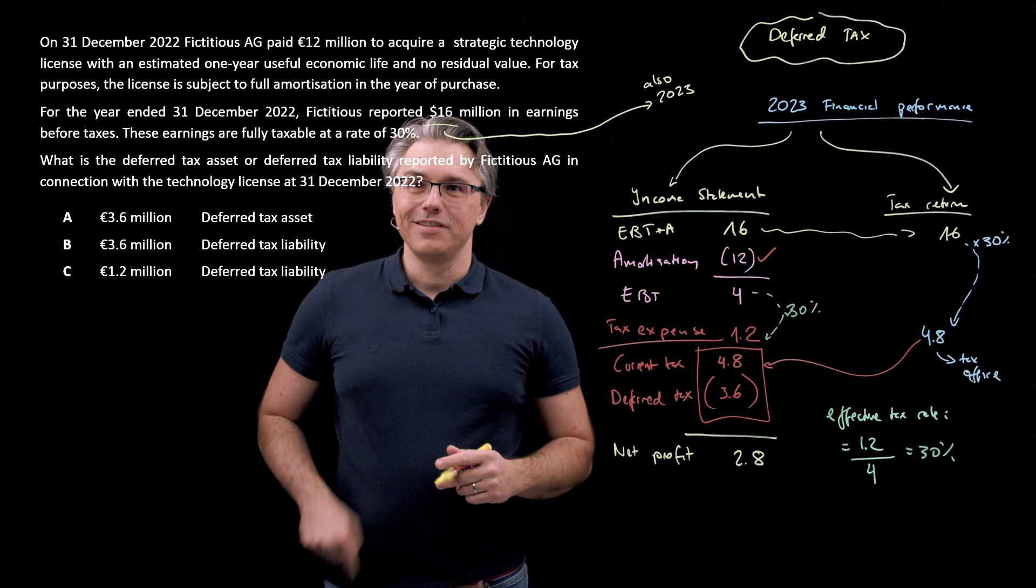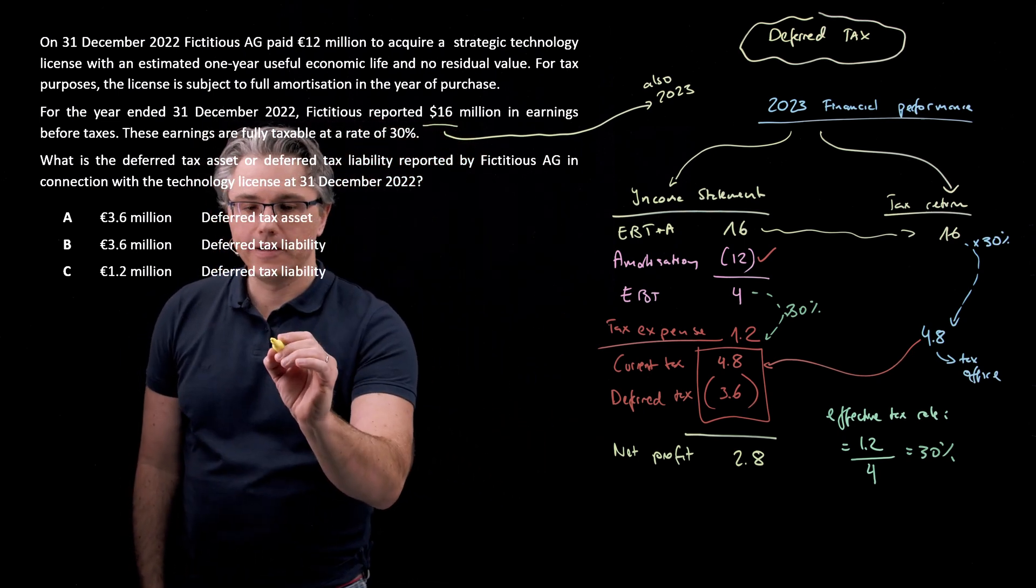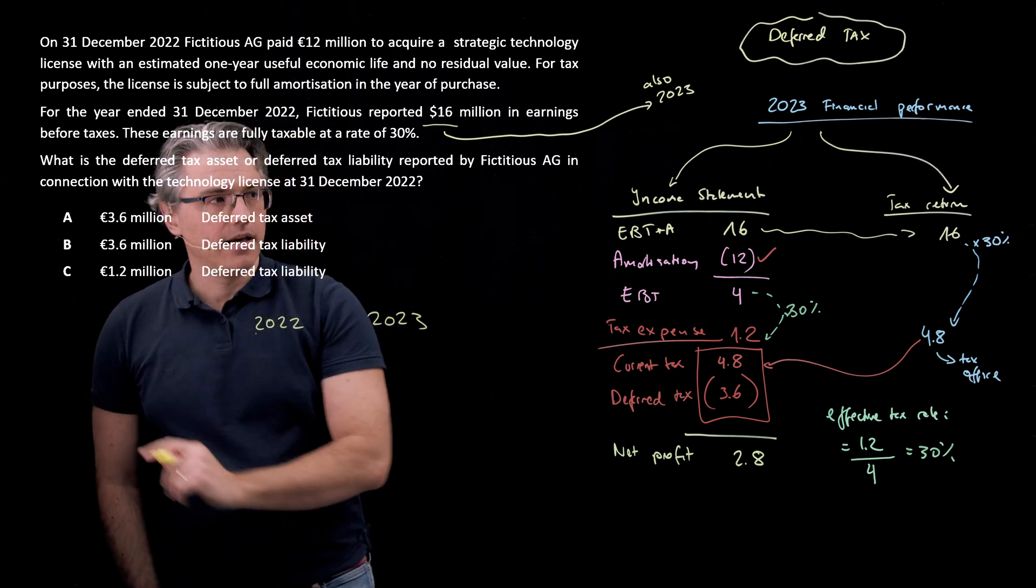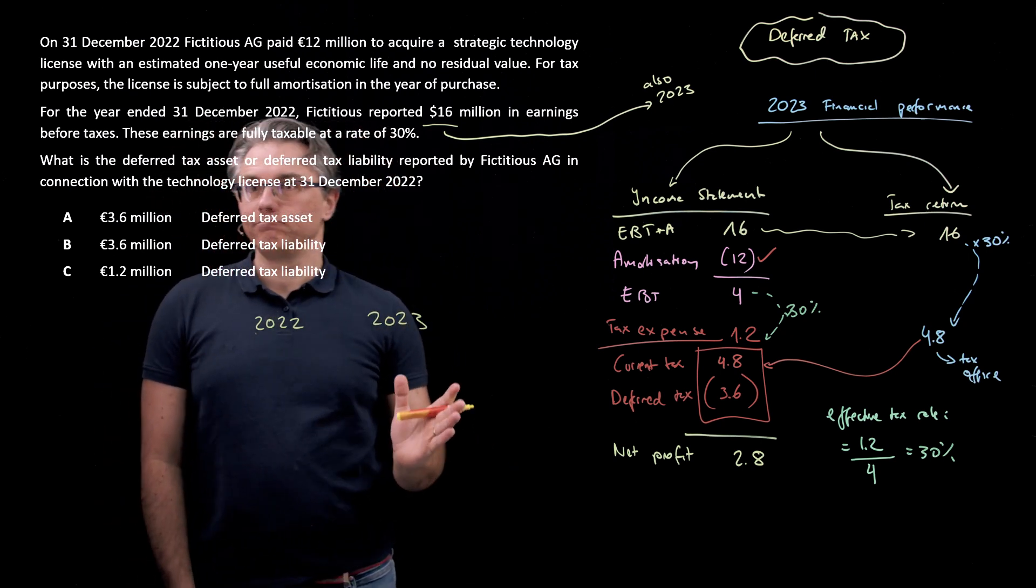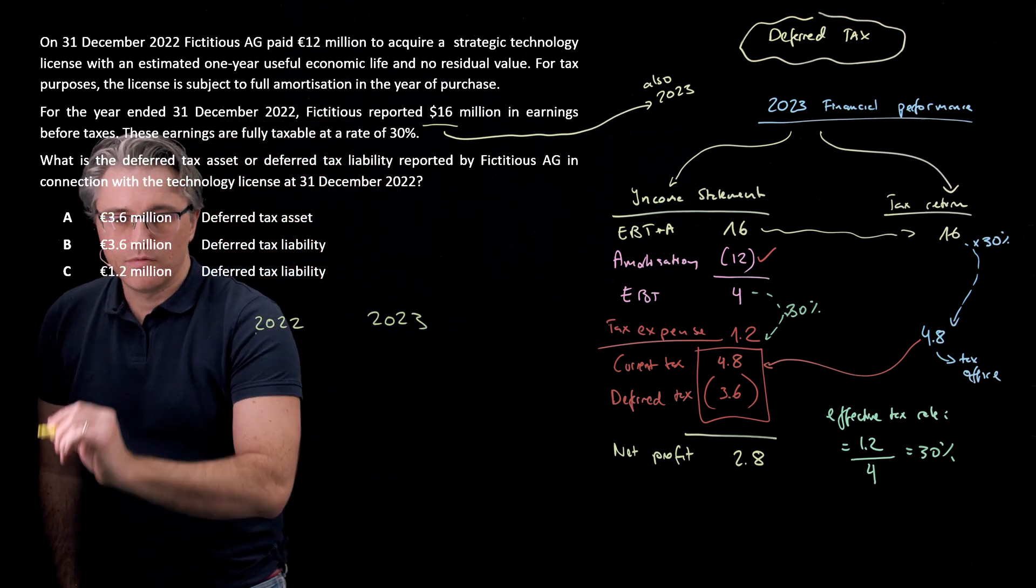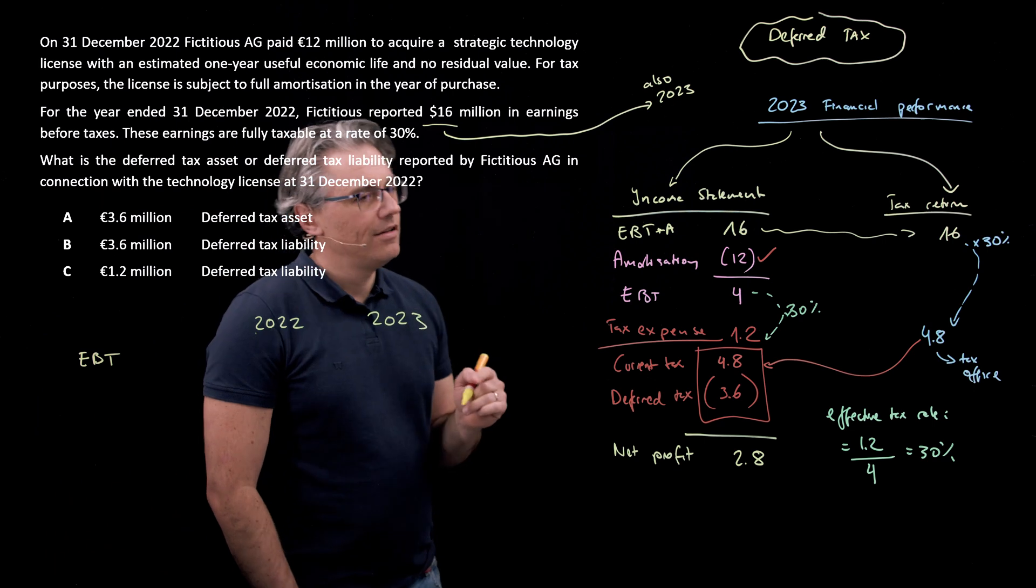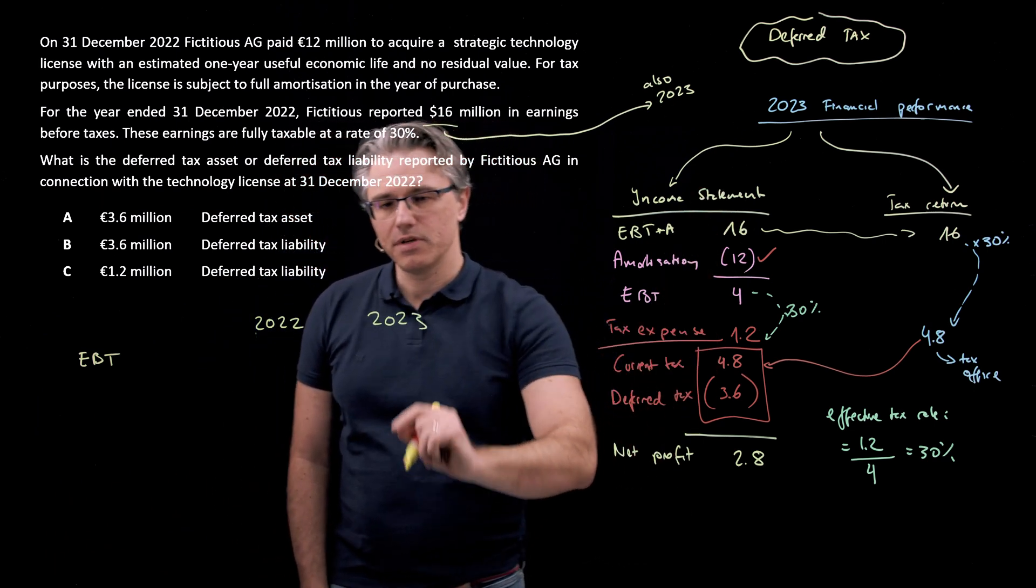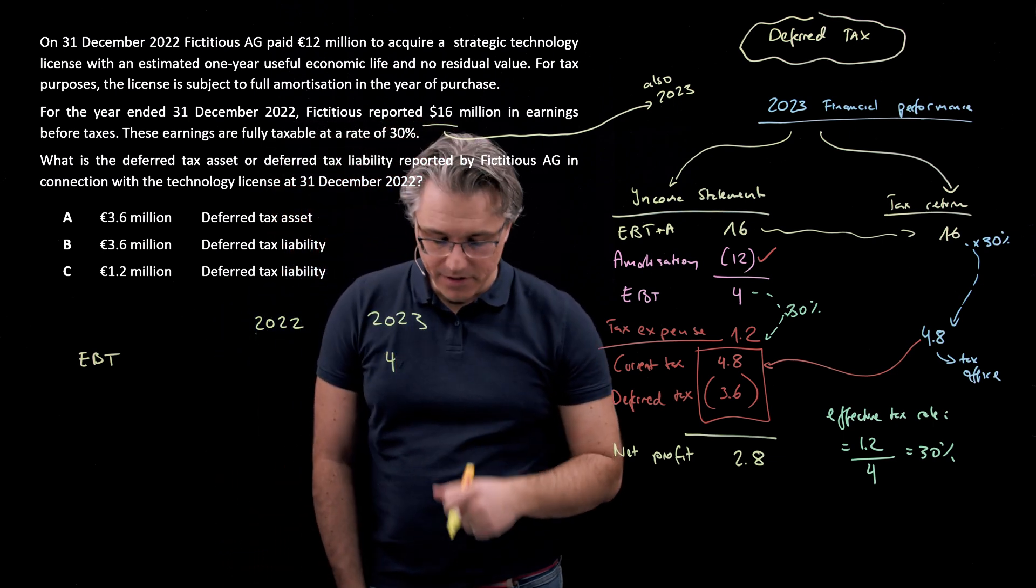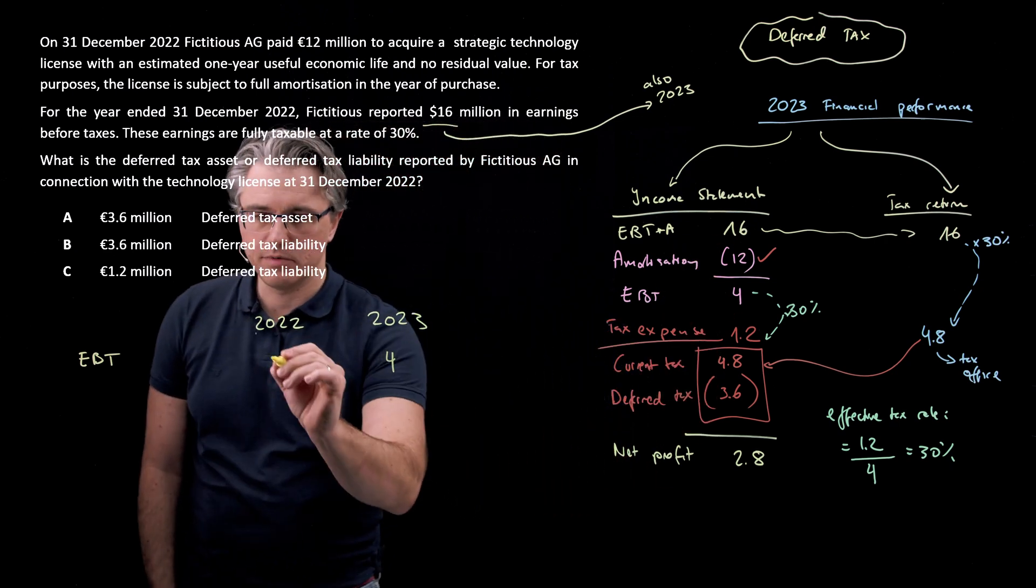To get the bigger picture of this, I want to do a table similar to the one I did for the previous scenario in which I'm going to have two columns, one for 2022, the other for 2023. First of all, we're going to have earnings before tax here. And earnings before tax in the 2023 income statement were 4. However, in the previous year, that was 2022, because we didn't have any deduction for amortization, earnings before tax were 16.